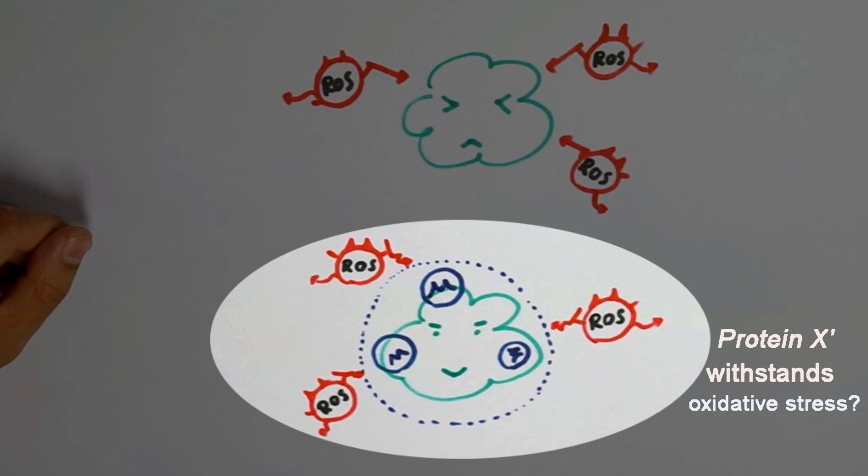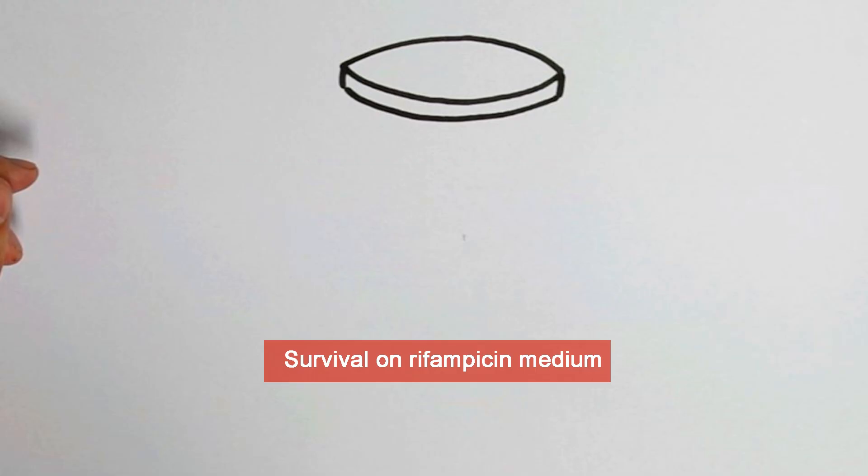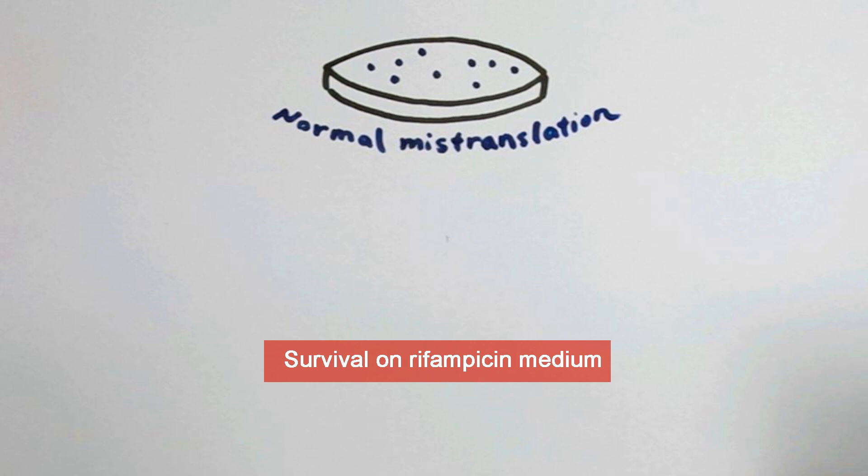Are there any other possibilities? Well, our group studies mistranslation in mycobacteria. We showed that mycobacteria can misincorporate glutamate and aspartate at high levels, around 1% per codon, and this increases even more in response to stress.